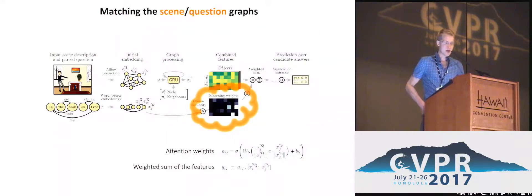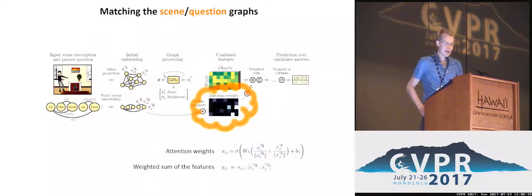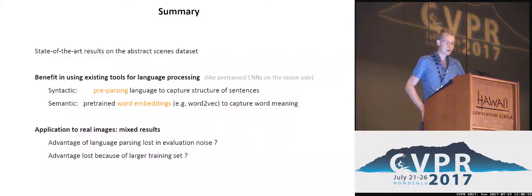In summary, this work shows how to use structural representations for VQA. The main benefit is encoding the structure of both the scene and the language, which can otherwise be lost in traditional fixed-length vector representations. Other experiments in this paper also show a strong advantage for using pre-trained word embeddings to encode the semantic aspect of language. We have also obtained some results on real images with this method, though results have been mixed so far. I believe there is still great potential benefit in focusing VQA efforts on better processing of language.